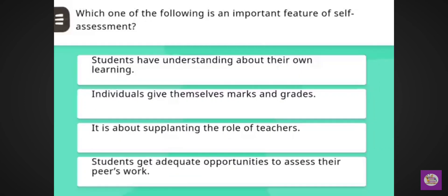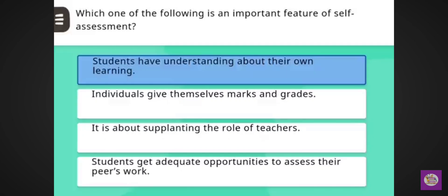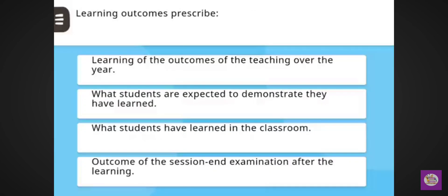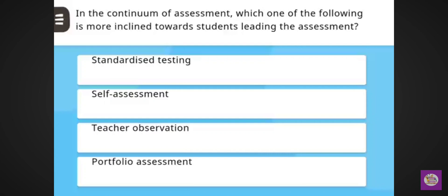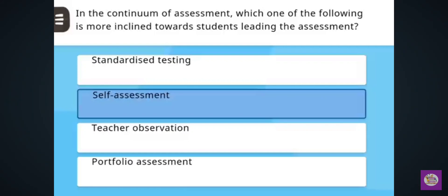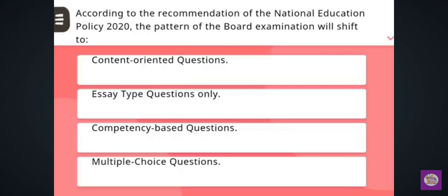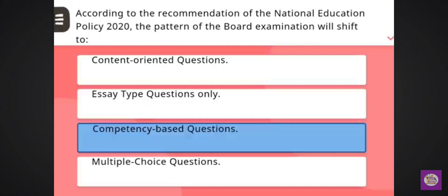Next question: Which one of the following is an important feature of self-assessment? Correct answer: students have understanding about their own learning. Next question: Learning outcomes prescribed what students are expected to demonstrate they have learned. Next question: In the continuum of assessment, which one of the following is more inclined towards student leading the assessment? Correct answer: self-assessment. Next question: According to the recommendation of the National Education Policy 2020, the pattern of the board examination will shift to — correct answer: competency-based questions.